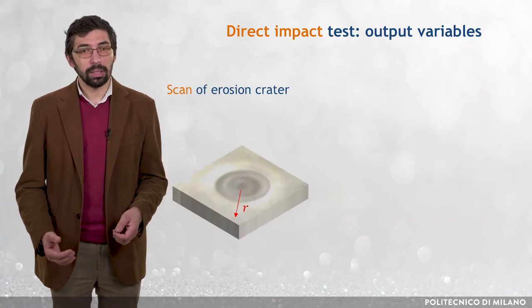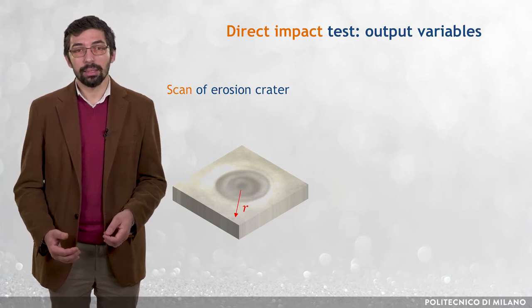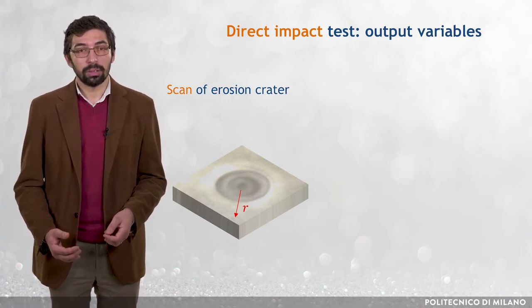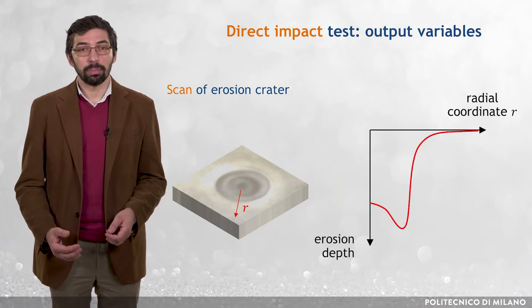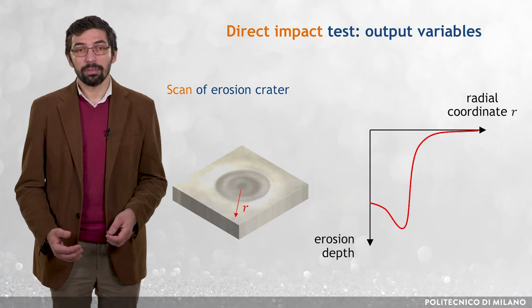Additionally, and mainly for research purposes, profilometers can be used to characterize the erosion crater, which, for asymmetric holes produced by normal jet impingements, is quantified by means of a radial erosion depth profile.